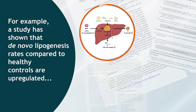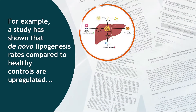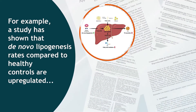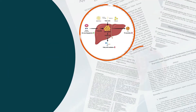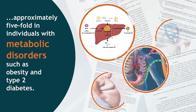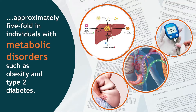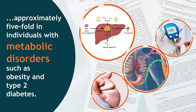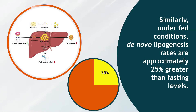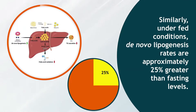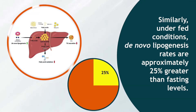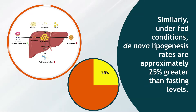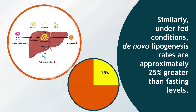For example, a study has shown that De Novo Lipogenesis rates are upregulated approximately five-fold in individuals with metabolic disorders such as obesity and type 2 diabetes, compared to healthy controls. Similarly, under overfed conditions, De Novo Lipogenesis rates are approximately 25% greater than fasting levels.